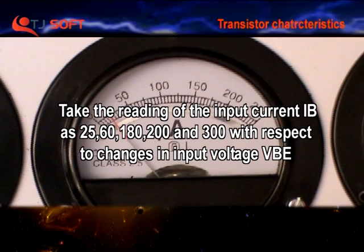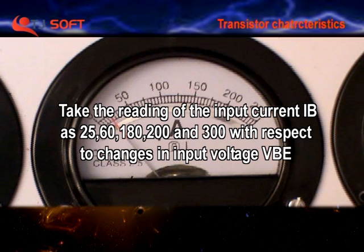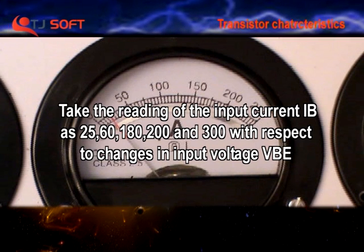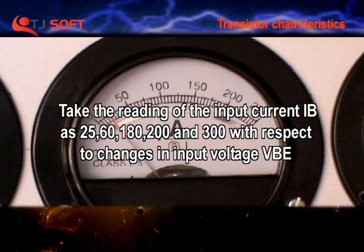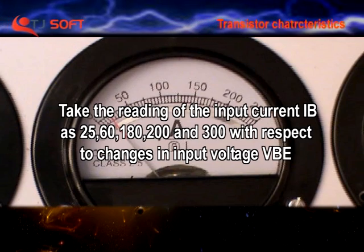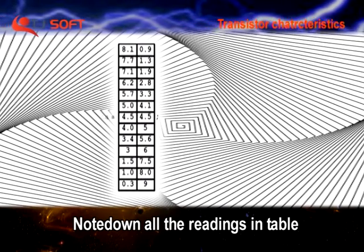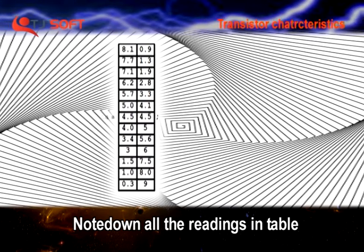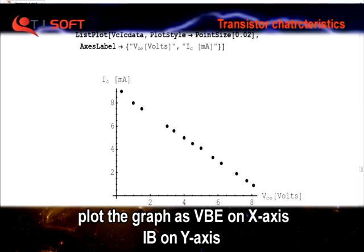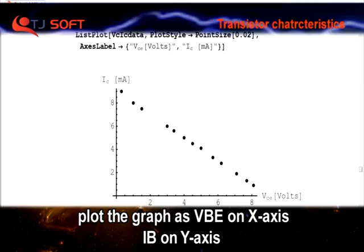Take the readings of input current IB as 25, 60, 180, 200, 300 with respect to changes in input voltage VBE. Note down all the readings in the table and plot the graph with VBE on x-axis and IB on y-axis.